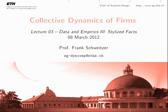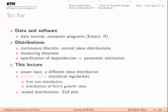Good morning everyone. Welcome to lecture number three of our course Collective Dynamics of Firms. To recap the last two lectures: we discussed the data we have available and the software we want to use to analyze it. Then in the last lecture we introduced the meaning of distributions, talked about continuous versus discrete distributions, and introduced the normal distribution and skew distributions, which are relevant for today.